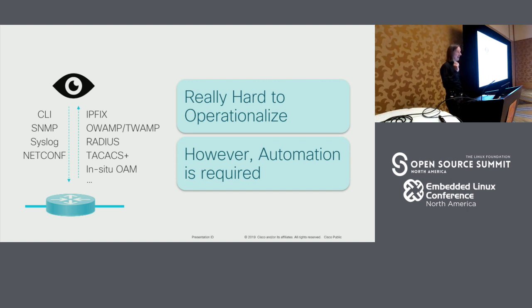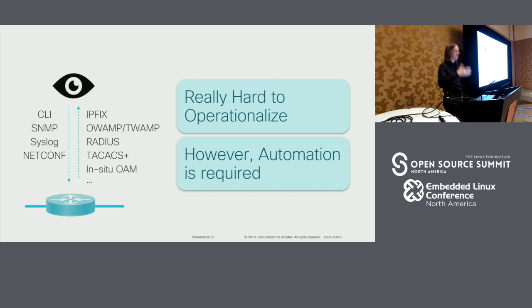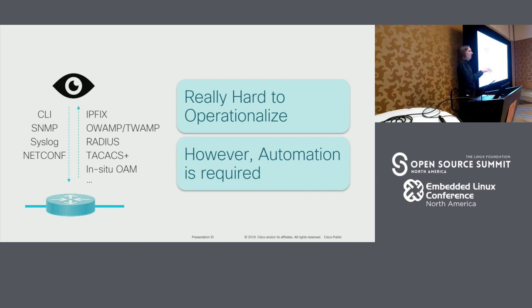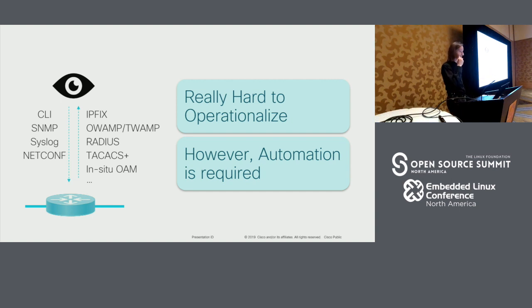NetFlow, IPfix. You have active measurements with one-way or two-way active measurement protocols — the evolution of ping and traceroute. Then you have all kinds of protocols that extract state from the device and push per-subscriber state into the device with all the AAA protocols like RADIUS, TACACS, Diameter. I'm also partly responsible for growing that mess by adding metadata — operational metadata — to every single customer packet within IOAM, a journey we started in 2015 in the IETF, so that we have entire traceability of all traffic as it traverses the network.